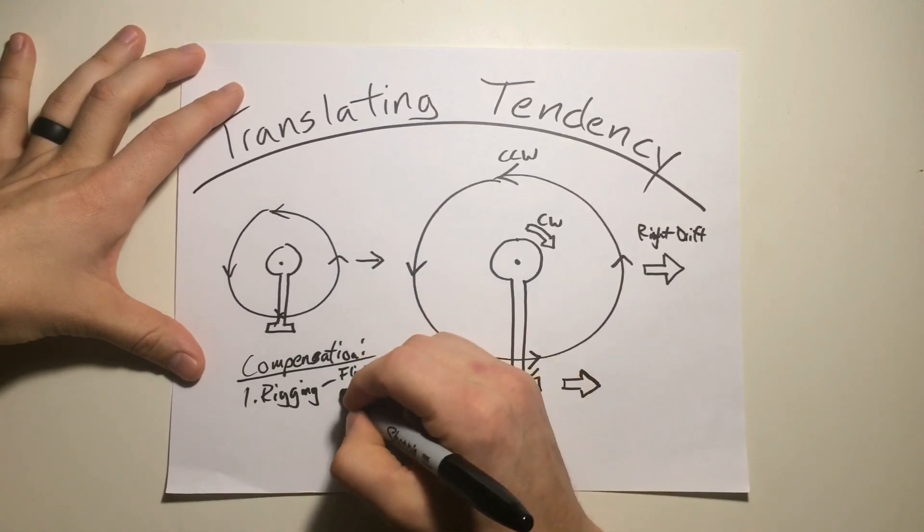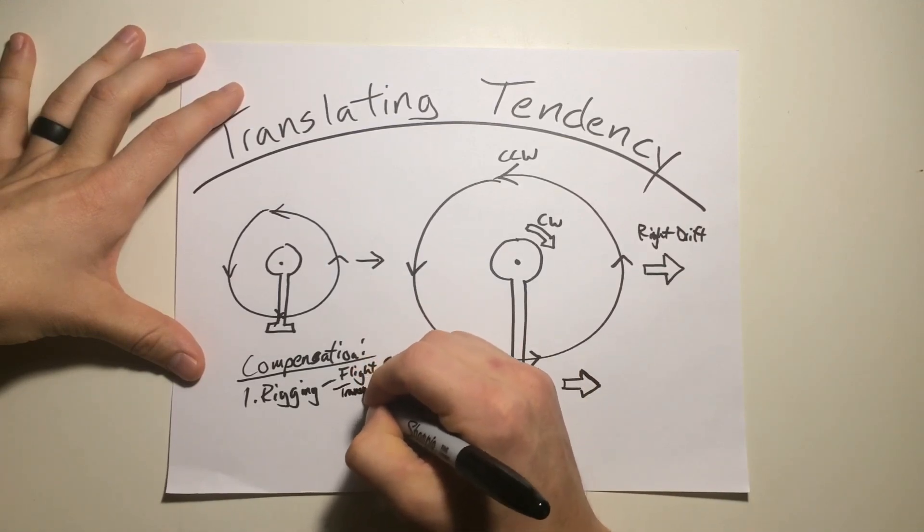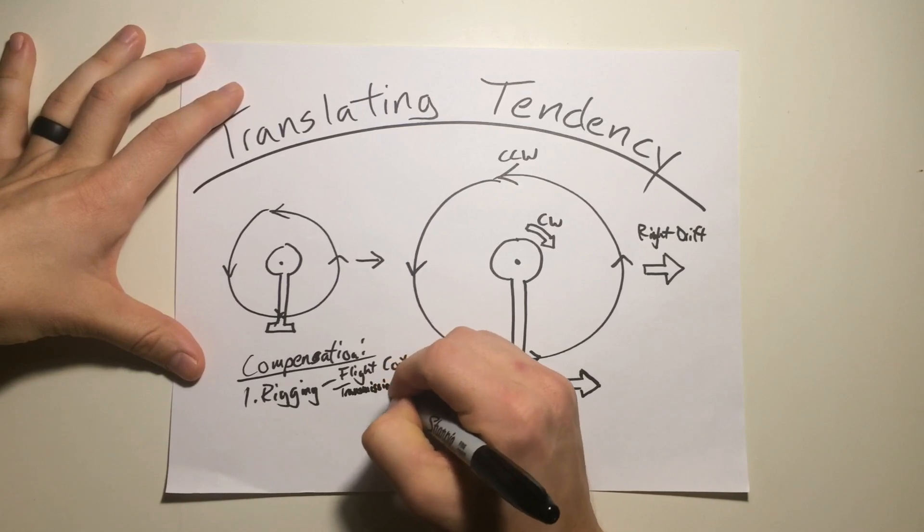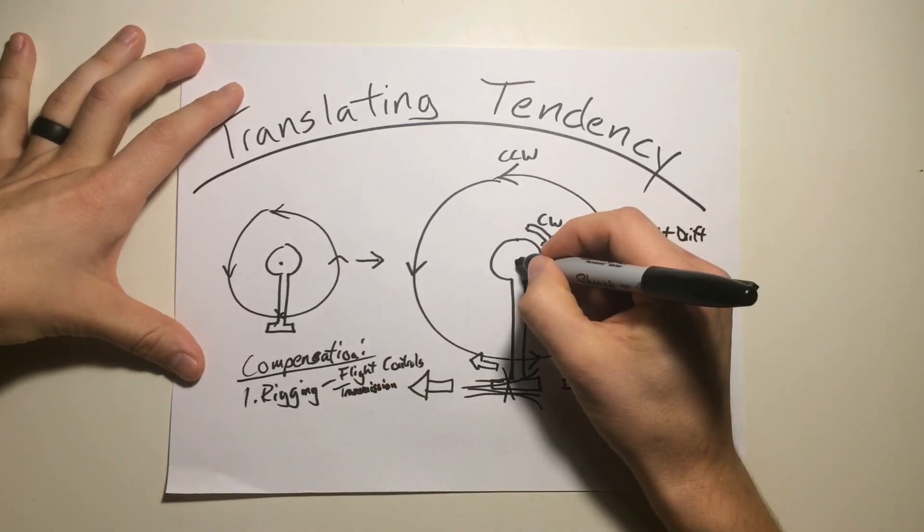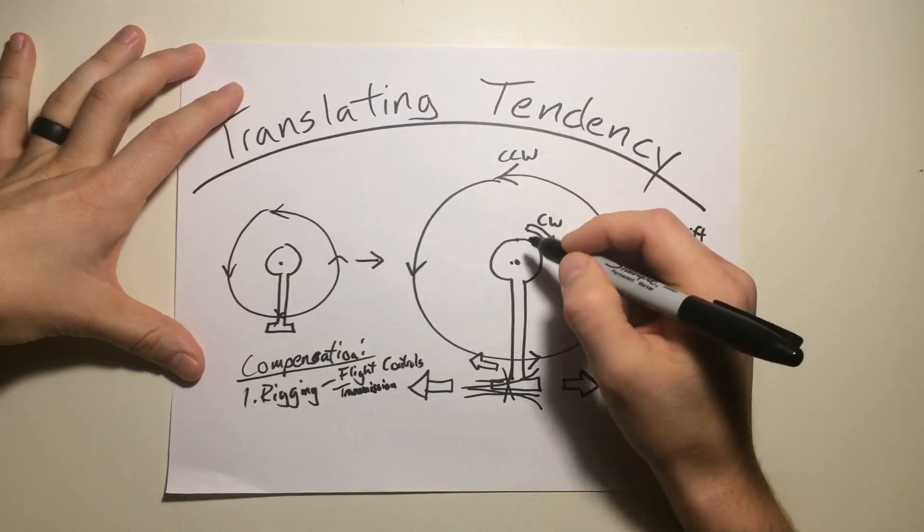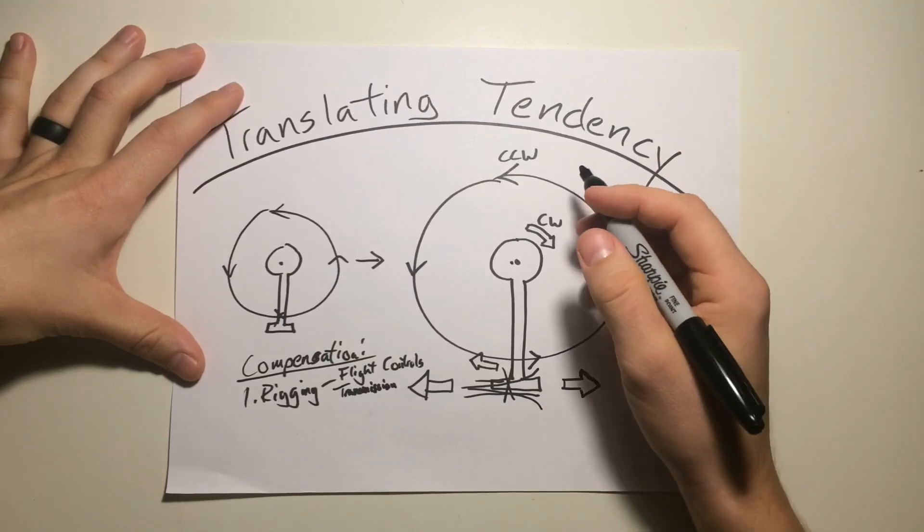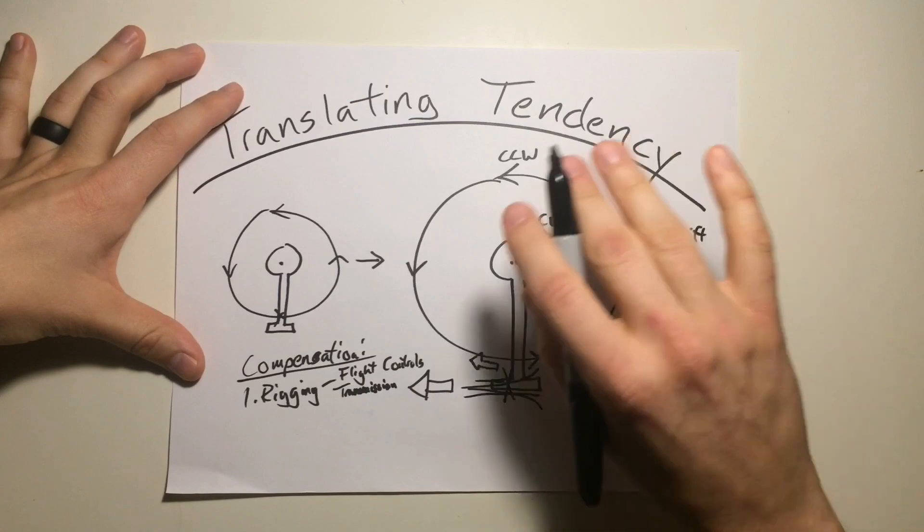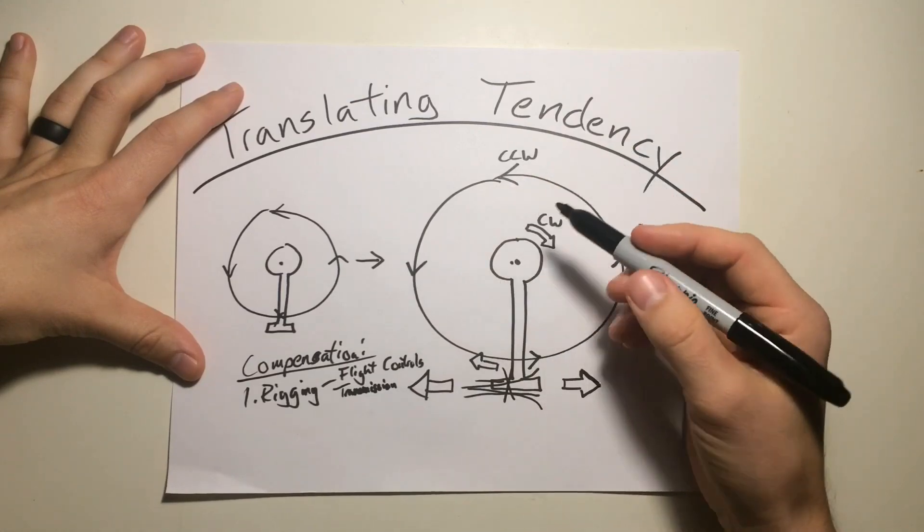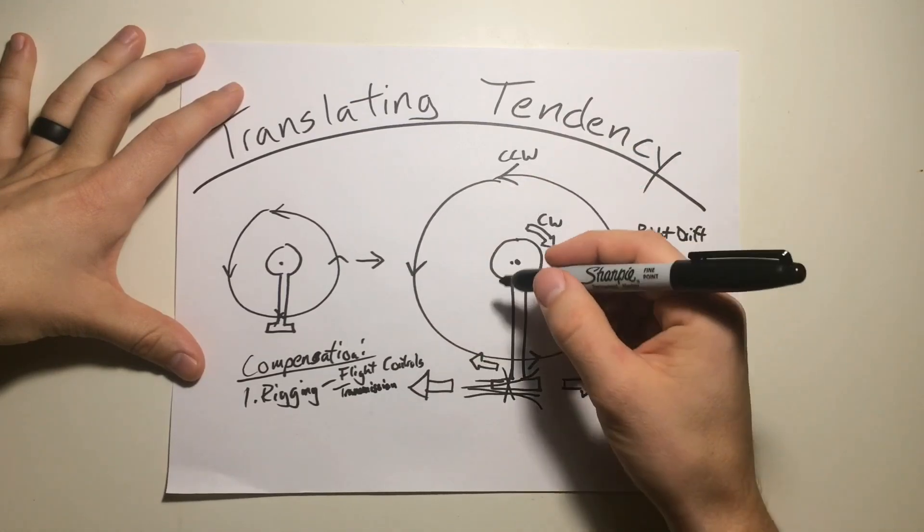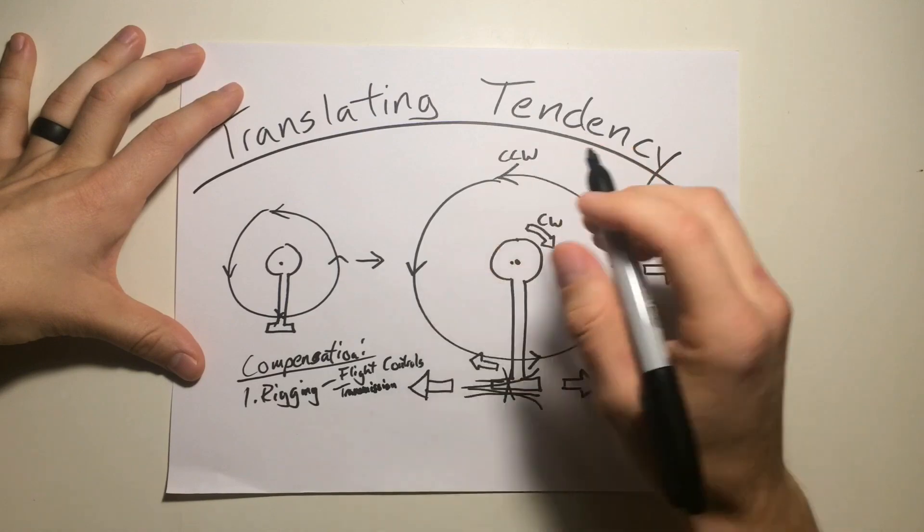Another way, you can have something like your transmission being mounted slightly offset. So, say instead of right in the center of the helicopter, you shift it slightly to the left, and this is going to cause a shift in your center of gravity, which would normally cause a helicopter to drift to the left, but because of translating tendency, now they counteract each other, and it's at a stationary hover. It just shifts the center of gravity.